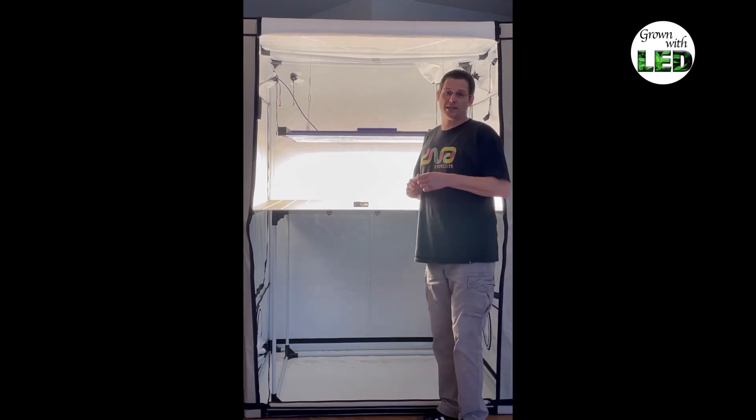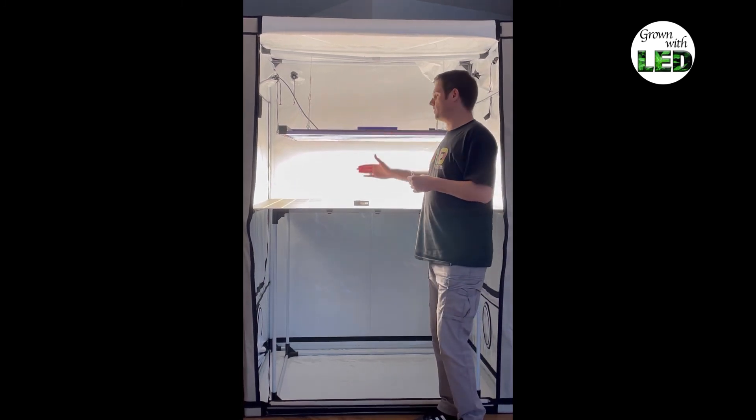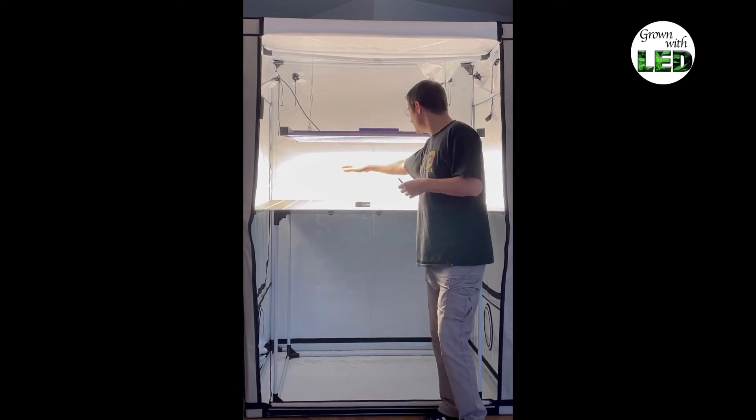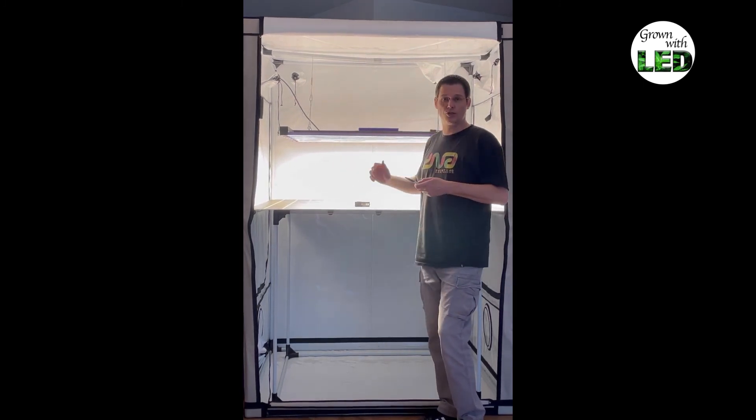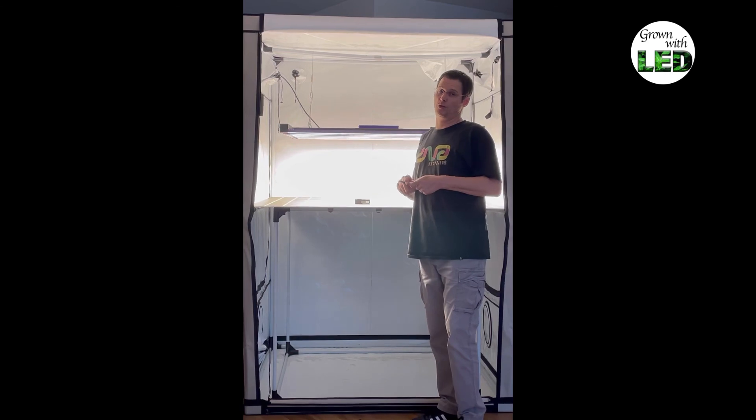The second downside I explained last time already is that you cannot adjust the height over your canopy. If you have some lower plants you cannot go closer anywhere, you have to always use the same distance to your plants.